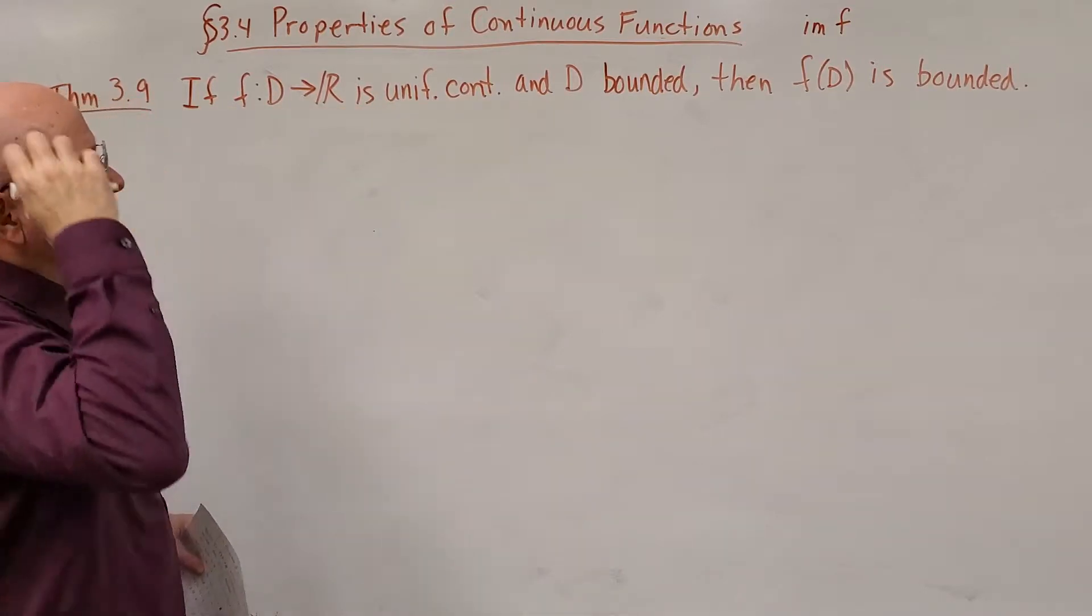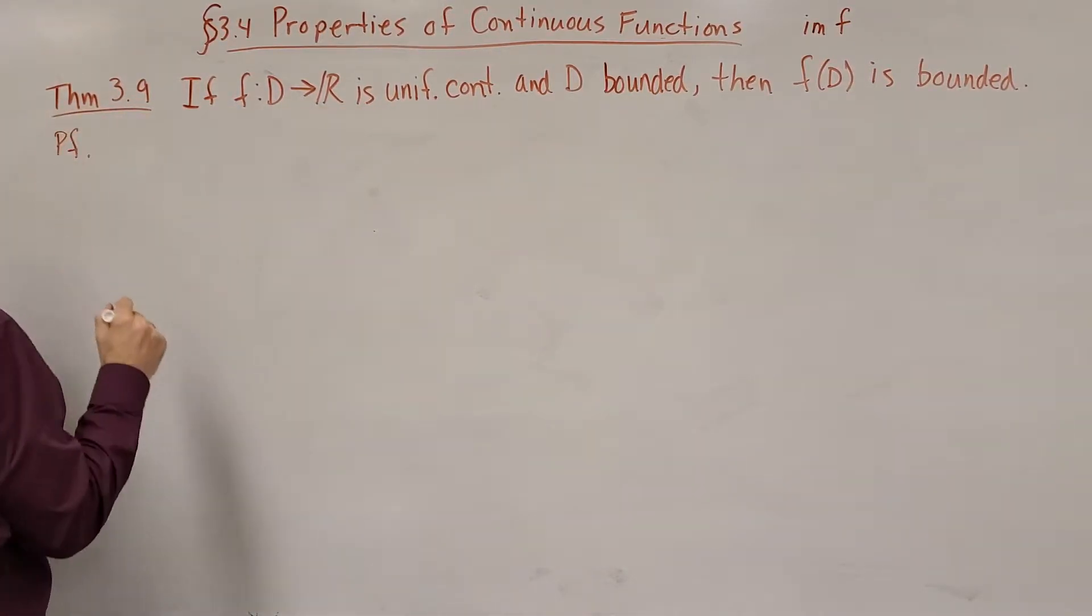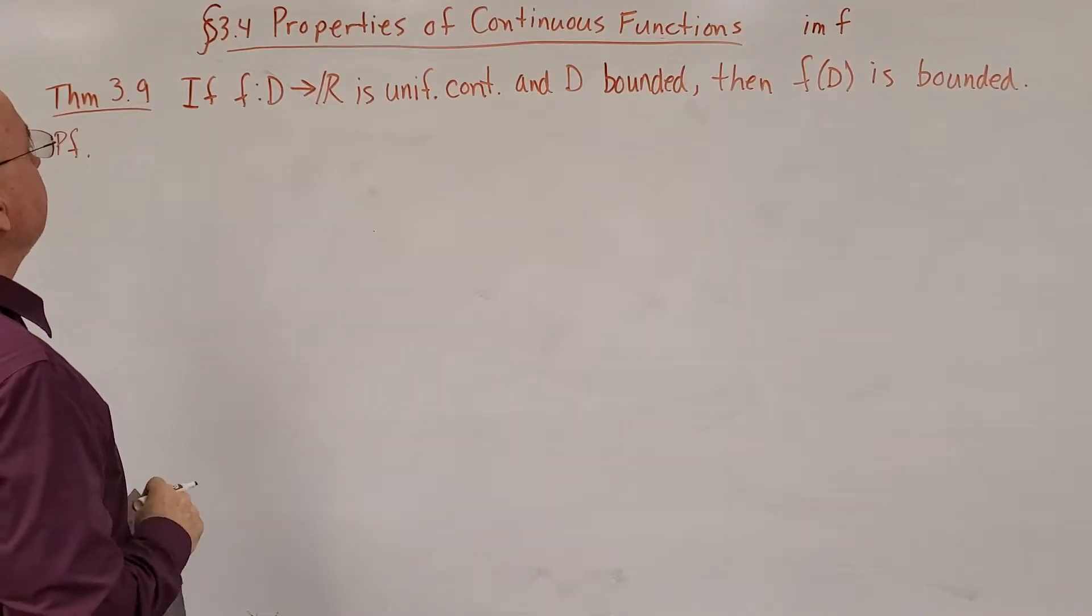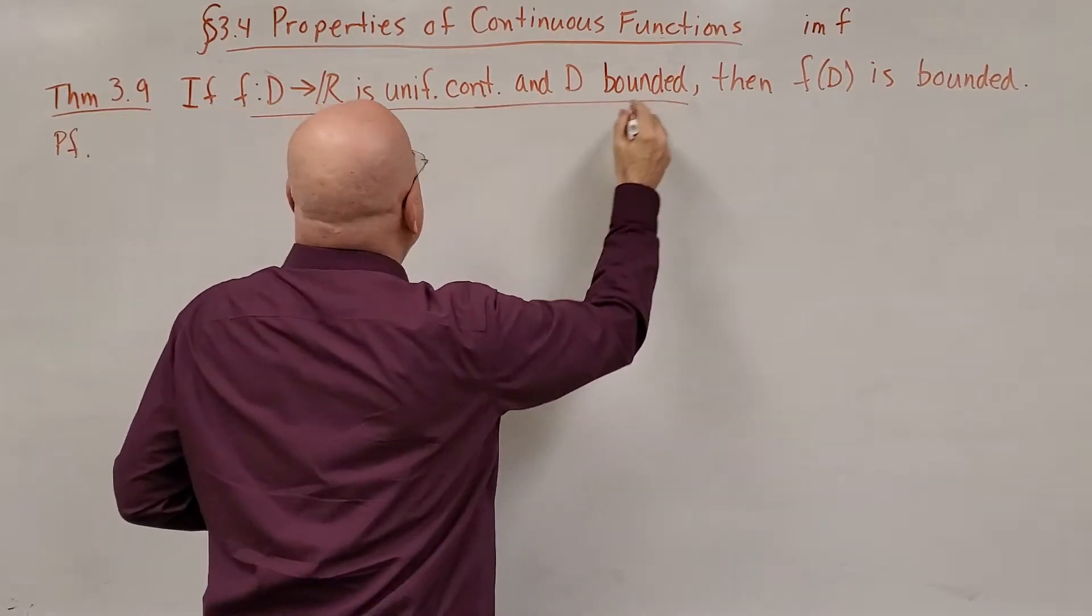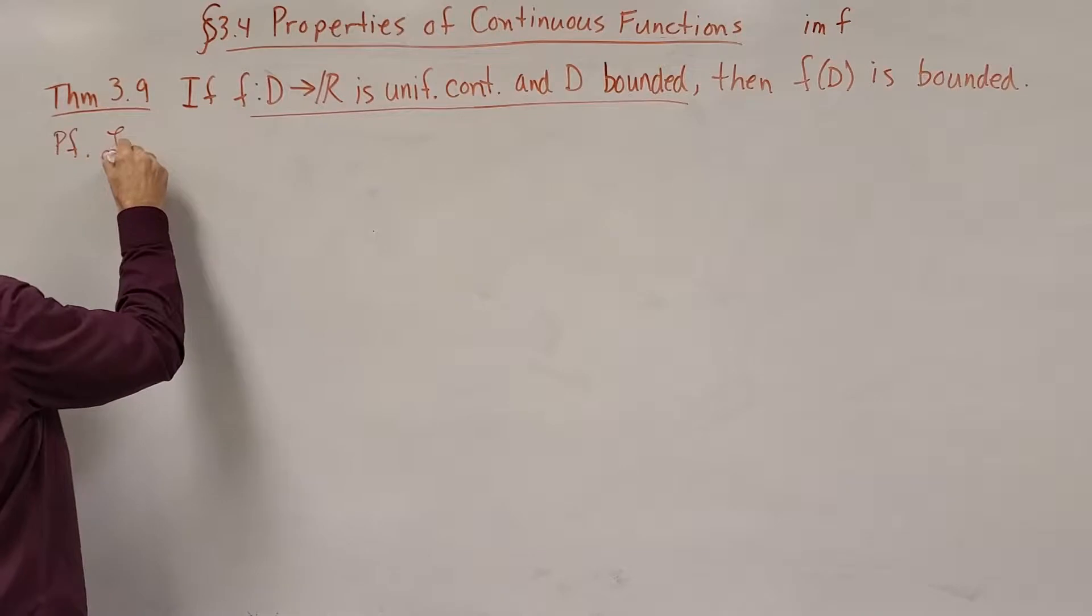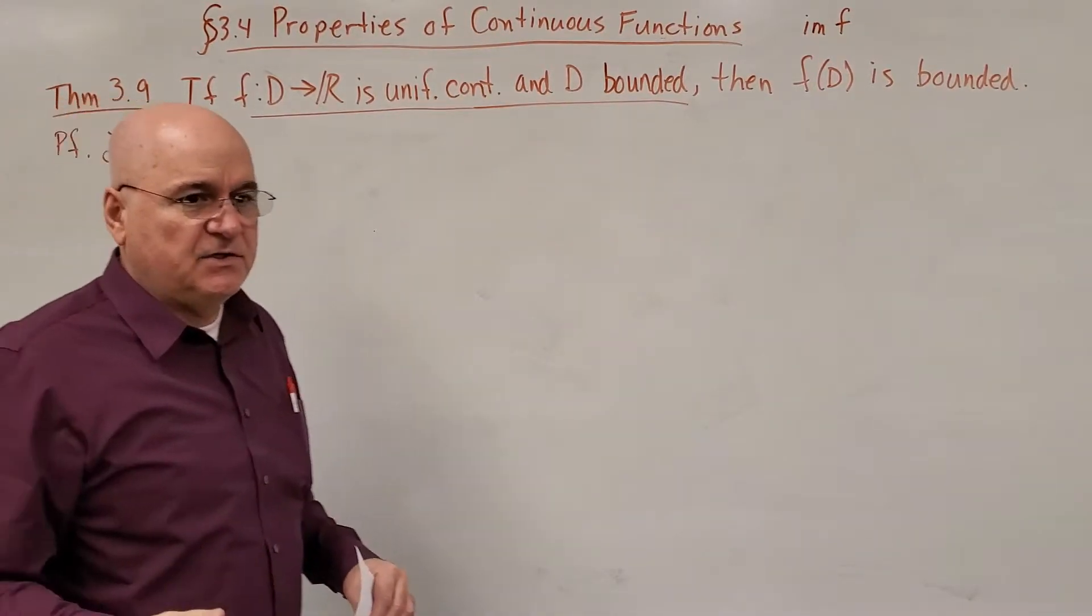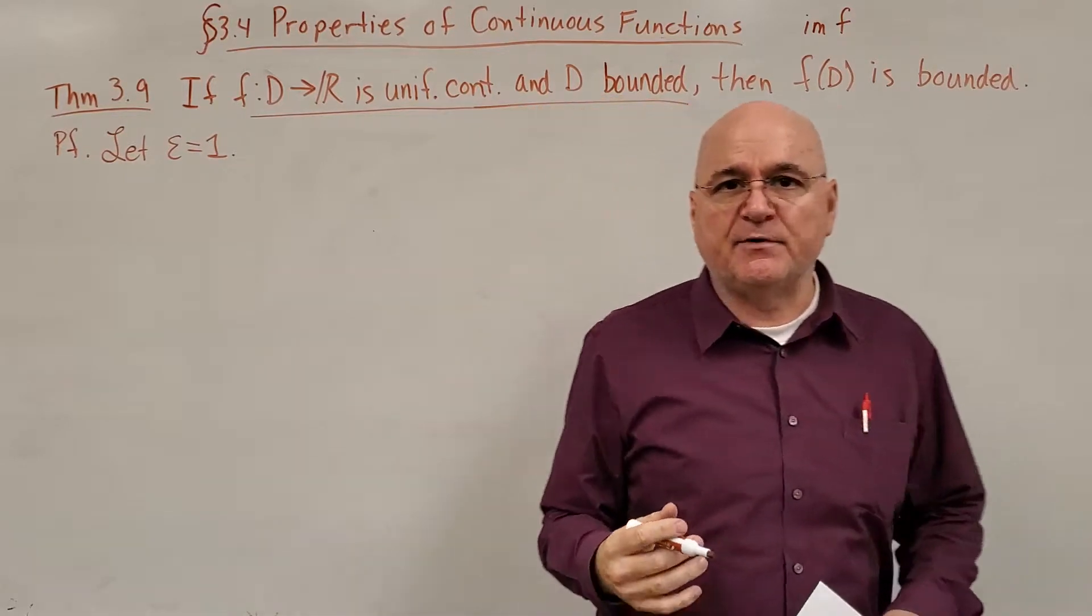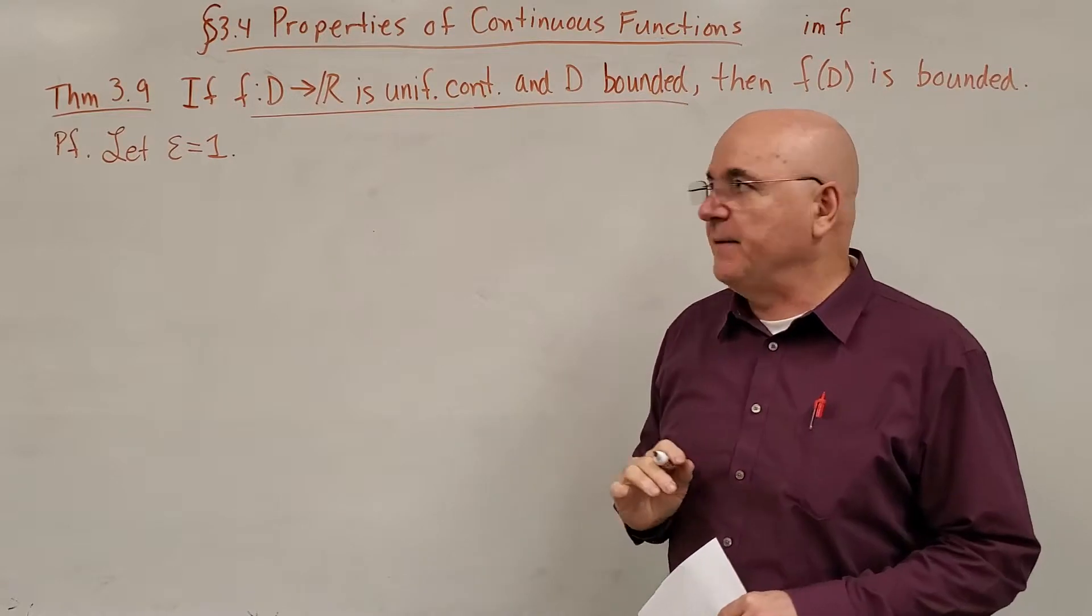Okay, let's go ahead and prove this. For the proof, I'm going to start off by, well, since I know it's uniformly continuous and D is bounded, I know it's uniformly continuous, I'm going to start off by saying, let's just choose any value, any positive number for epsilon. I'm going to choose one for convenience, but it would literally work for any positive number.